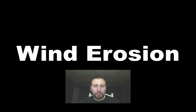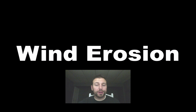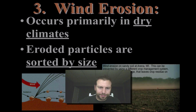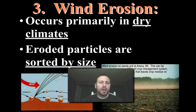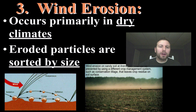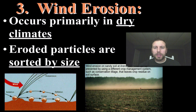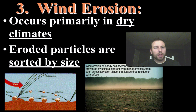Hello ladies and gentlemen, welcome back to another screencast by Earth Science teacher Mr. Stana. Today we're going to talk about wind erosion. Wind erosion occurs primarily in dry climates. We don't see that humidity or water keeping the sediments together, so in dry climates it's a lot easier for them to get blown around or for sediment to get moved.